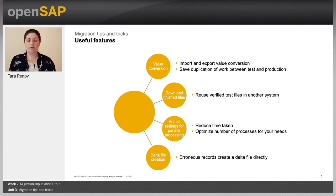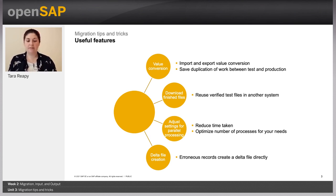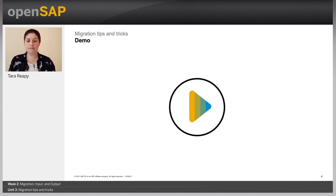Our system allows you to import and export value conversion files, saving duplication of work between the test environment and the productive environment. You can download files to reuse ones already verified in your test system directly in the productive environment. You can adjust settings for parallel processing to reduce time taken for particularly large files. We also create delta files where there are erroneous records, so instead of sacrificing the entire migration for a couple of errors, we create a new file with those records to migrate separately.